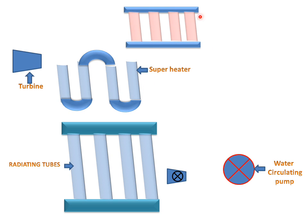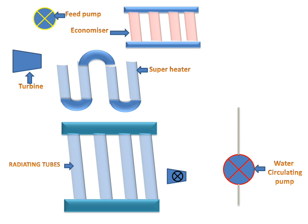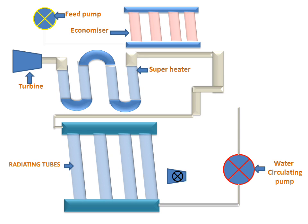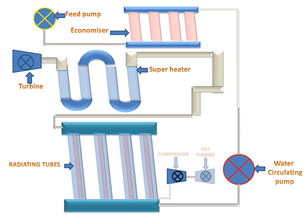There we will have an economizer for preheating the water. There is a feed pump. And these all are connected with the help of pipes like this way. This is the basic diagram of the VLOX boiler.